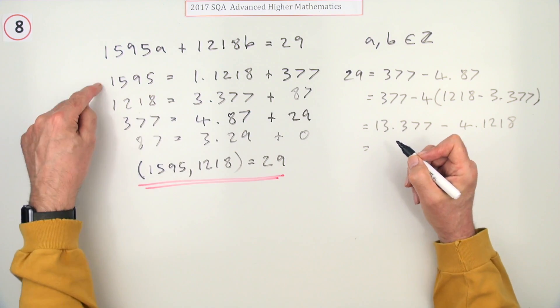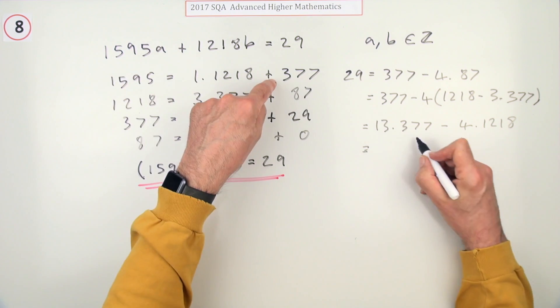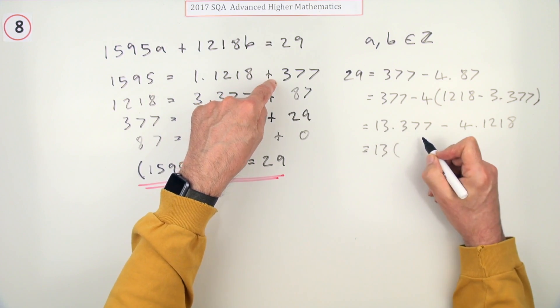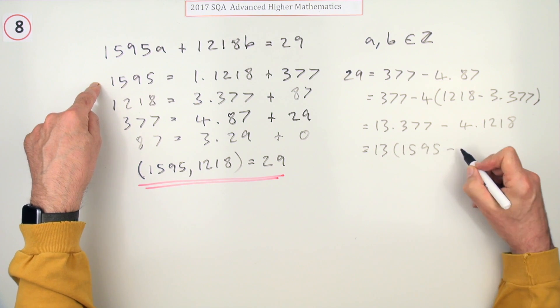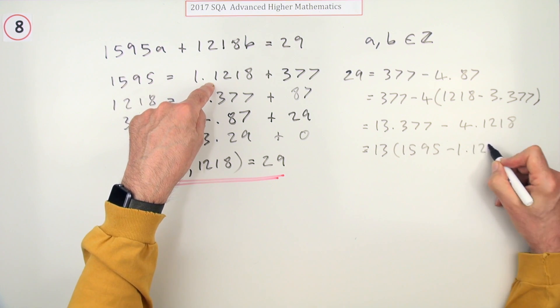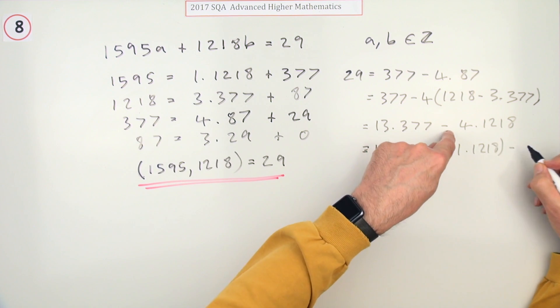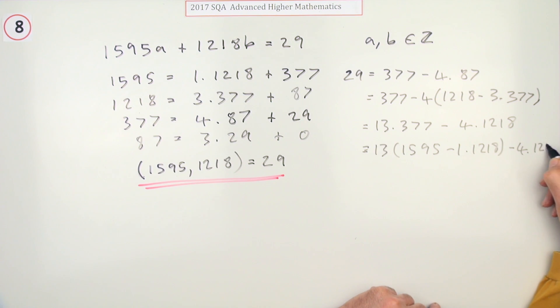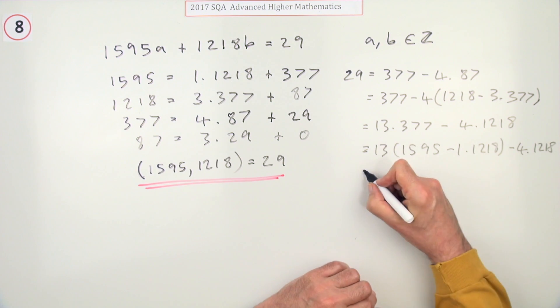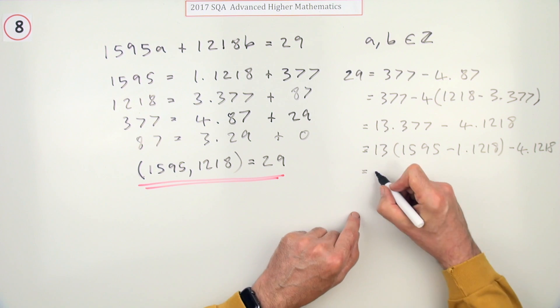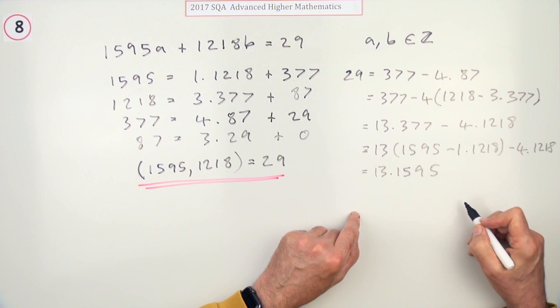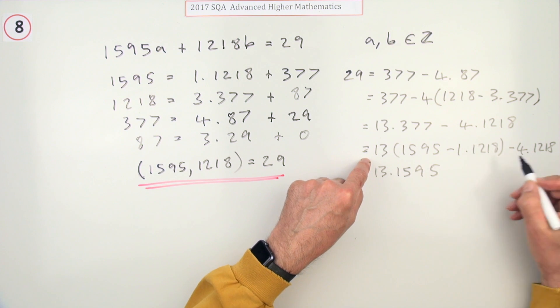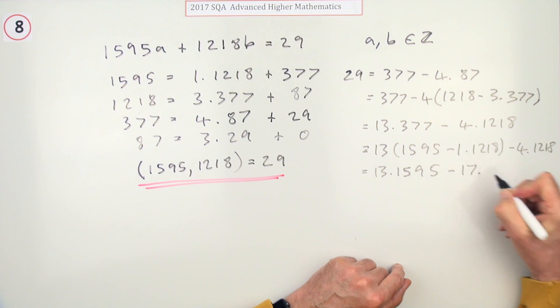Now I can go to this line, the last line I can do a substitution from, and change that 377: 1595 minus 1595 minus 1 lot of 1218 minus the 4 I've got already - 4 lots of 1218. And then all together I've got 13 times 1595 minus 13, minus another 4, minus 17 lots of 1218.